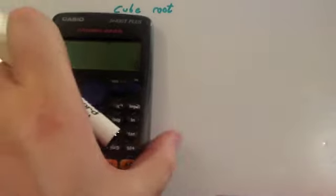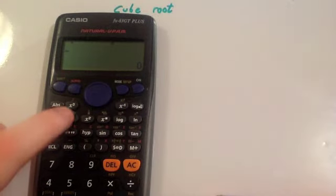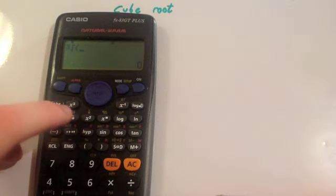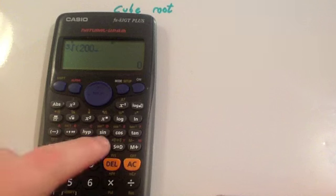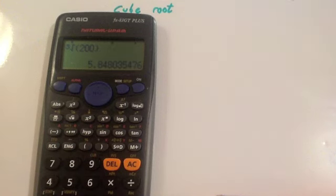Get your calculator, select the cube root button. So you press Shift and the square root button to get the cube root symbol. Type in 200 and then close brackets, press equals, and you get your answer: 5.848035476.